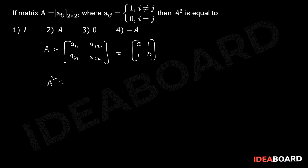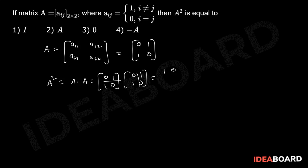Now A squared equals A into A, that is [[0, 1], [1, 0]] multiplied by [[0, 1], [1, 0]]. Multiplying this, we get [[1, 0], [0, 1]], that is equal to the identity matrix of order 2.